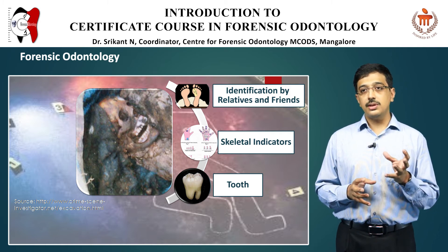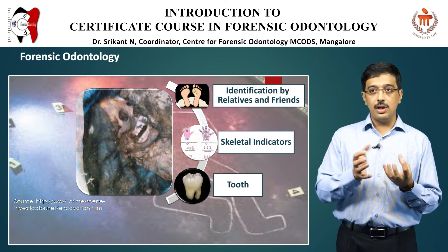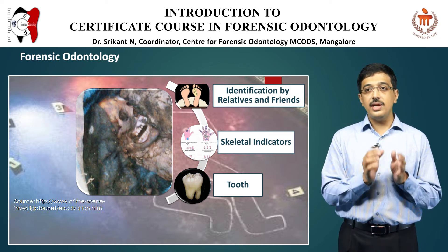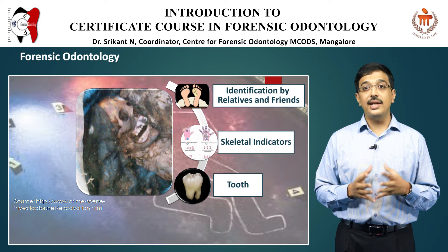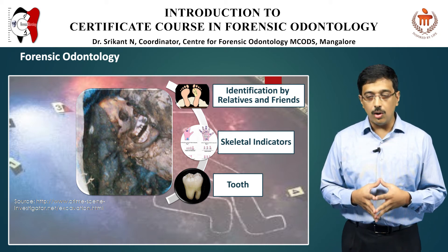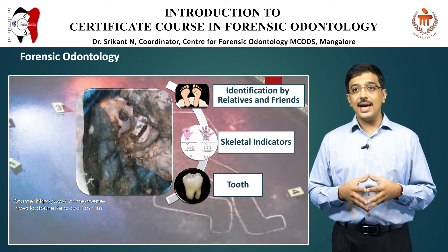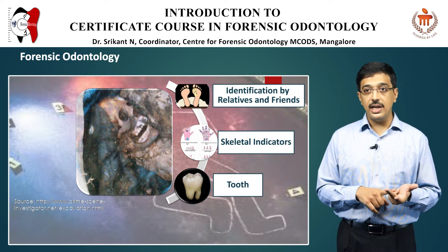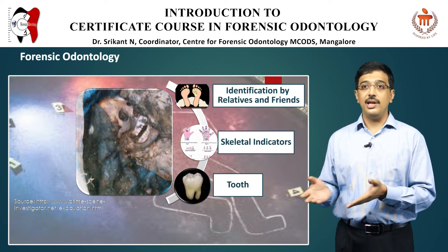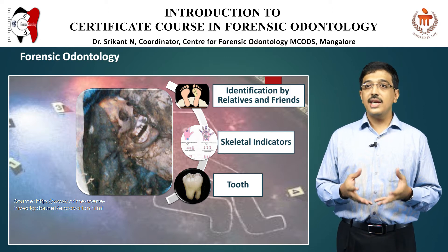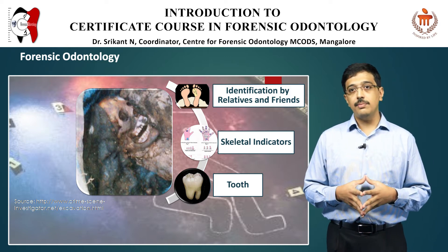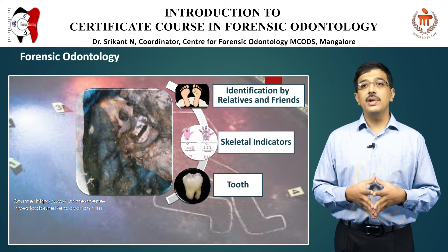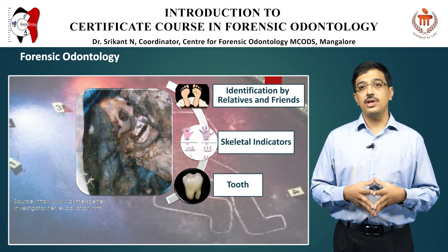The tooth is a structure which is bound by enamel on the outside, supported with dentine in the center, and the pulp which is very well protected inside contains DNA. Also, the tooth is unique as it exhibits sexual dimorphism, racial variations, along with age-related changes, and these can be used to identify a particular individual.